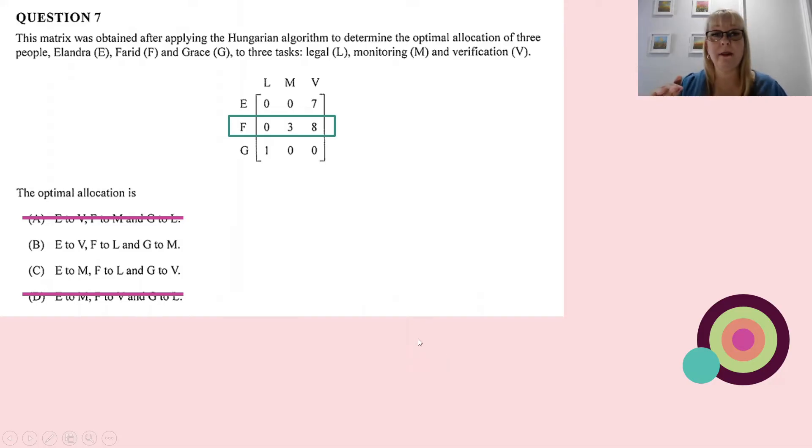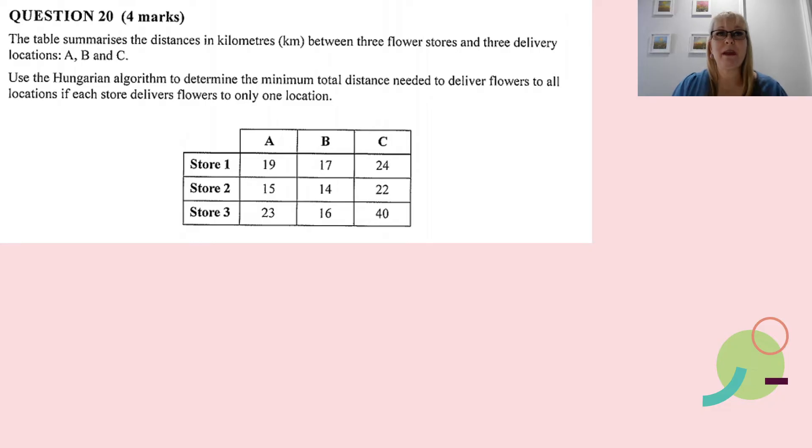Because F is going to M in option A and F is going to V in option D, we've eliminated those straight away. So F goes to L. You'll notice in options B and C it's the same for both, so now we need to take that a step further. Let's have a look now at Alandra. We've already eliminated legal. Alandra can't do legal. The only other zero that she's got is monitoring, so E must go to M. Option C is the only one that's going to work for, so therefore we found the optimal allocation.